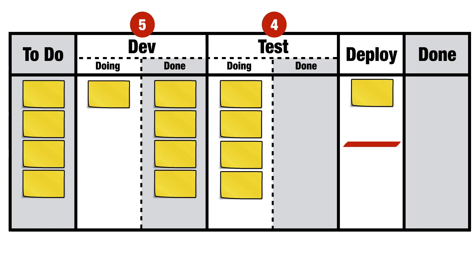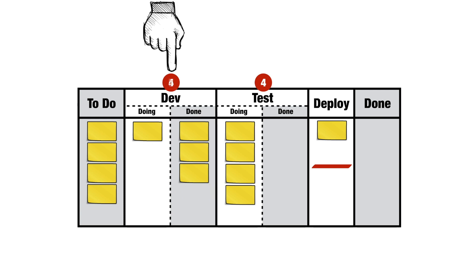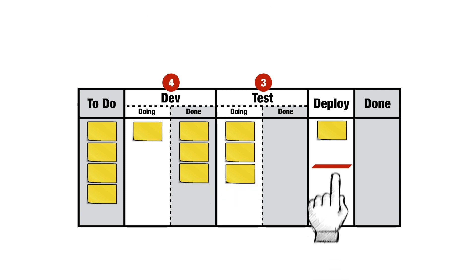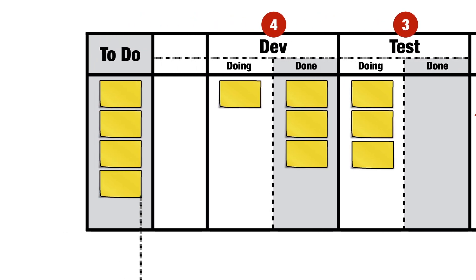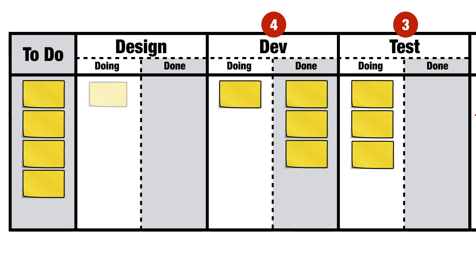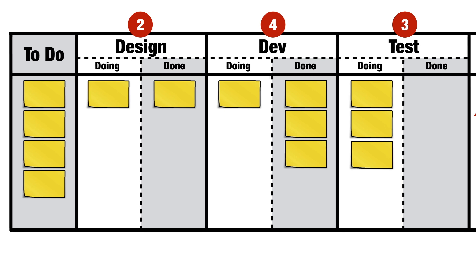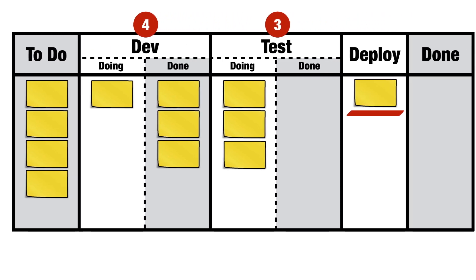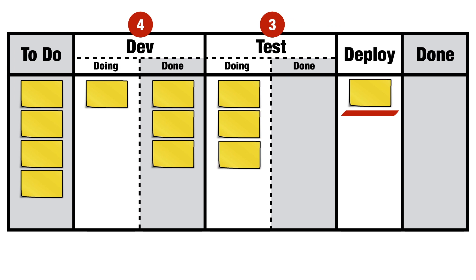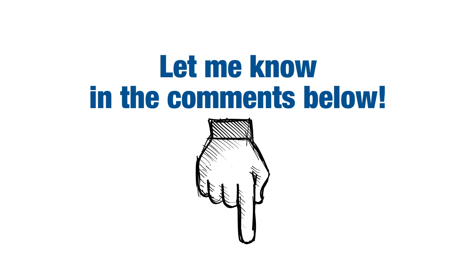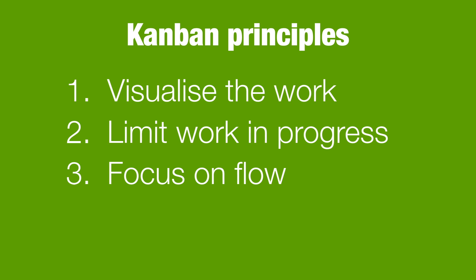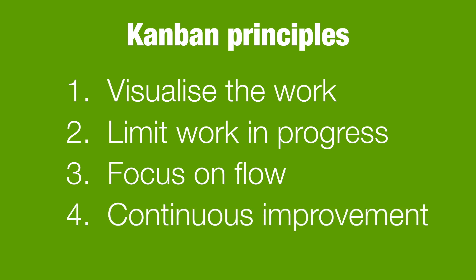What's next for this team? That's up to the members of the team to discover over time. They might want to further reduce work in progress, find reasons to do more specialization, or decide that a particular specialization no longer serves them — no longer pays them back for the additional work in progress it requires. There are many other things they might do, and please let me know in the comments below. Whatever they choose to do, they are on a journey — a journey that never really ends, a journey of continuous improvement. And that's our fourth and final Kanban principle: continuous improvement, also known as Kaizen.